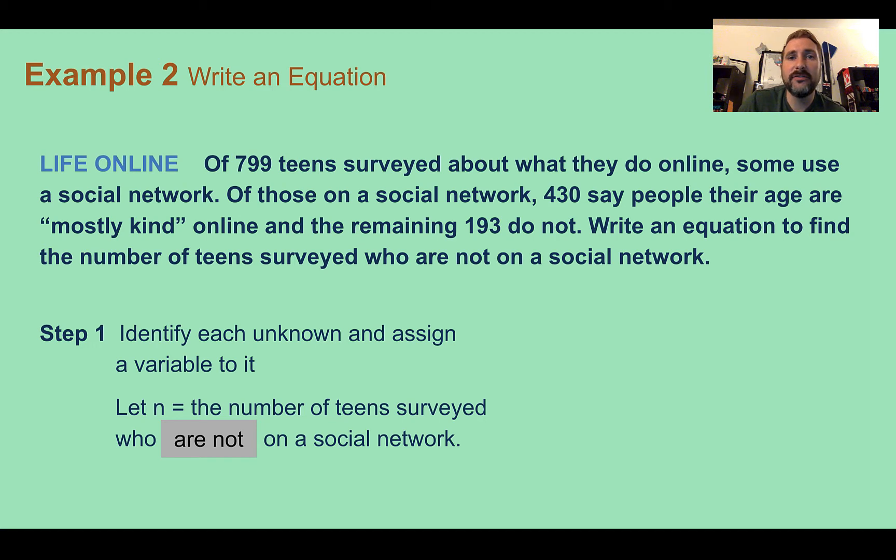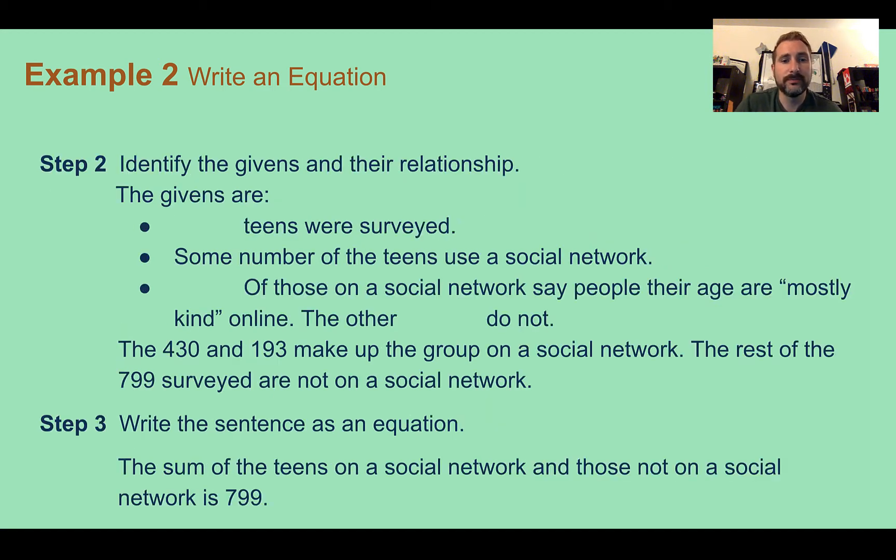So n is our variable for the unknown. Now step two, we're going to identify what's given and their relationship. So here we were given that 799 total teens were surveyed. We know that some teens use a social network and some do not.